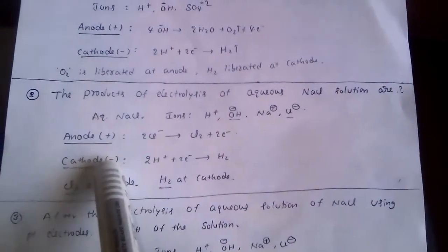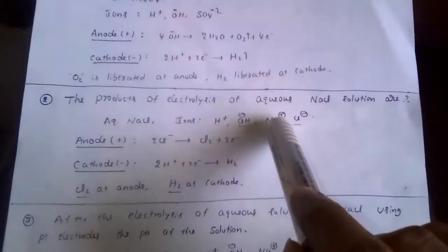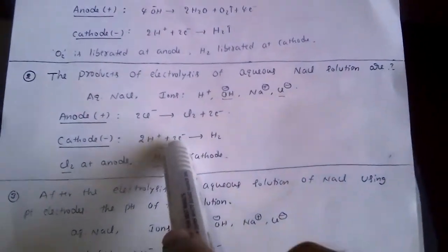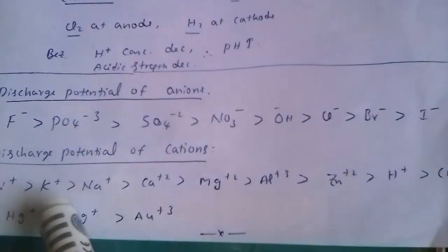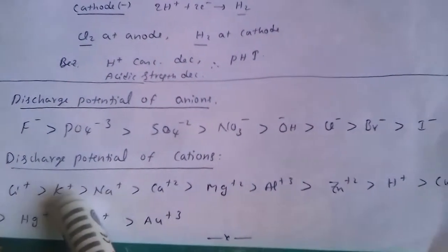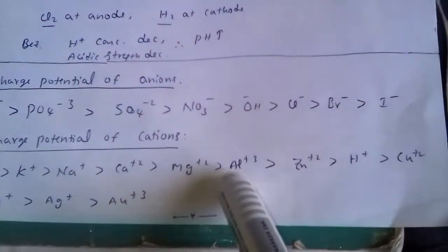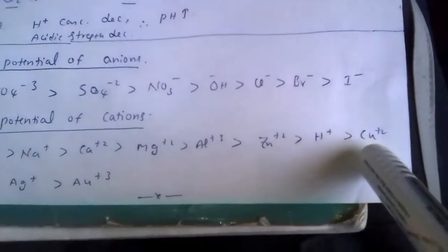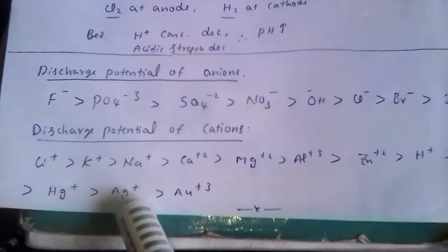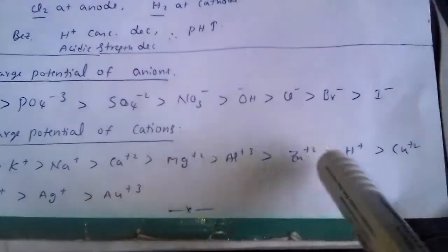Reduction reactions take place at the cathode. At the cathode (negative), positive ions H⁺ and Na⁺ move towards it. The discharge potential order of cations is: Li⁺ > K⁺ > Na⁺ > Ca²⁺ > Mg²⁺ > Al³⁺ > Zn²⁺ > H⁺ > Cu²⁺ > Hg⁺ > Ag⁺ > Au³⁺.